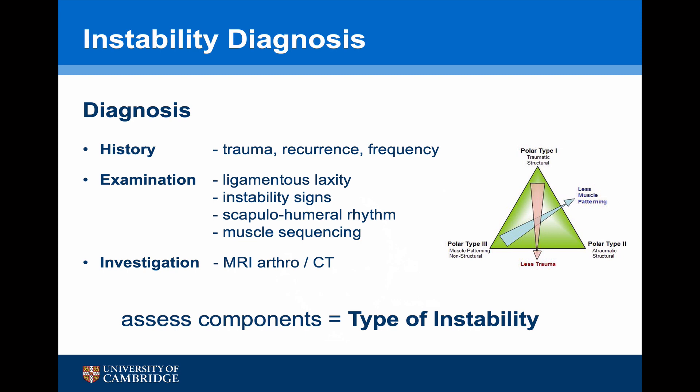In diagnosing the instability of a particular patient it's important to take into account their history — whether there's been trauma, recurrence, and frequency. When examining them it's important to look for ligamentous laxity, instability signs, scapulohumeral rhythm, and evidence of muscle sequencing. Investigations such as an MRI arthrogram or CT should be used to look at any structural component. It's only once you've assessed these components and applied them to the Stanmore triangle that you can diagnose a particular patient's type of instability.